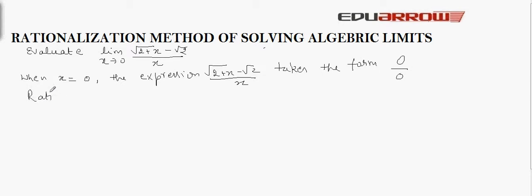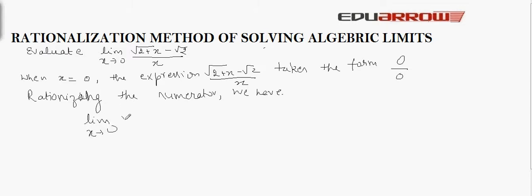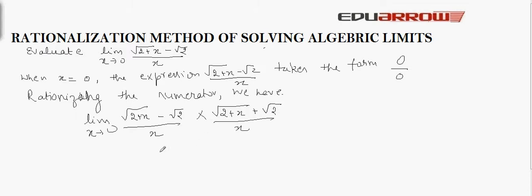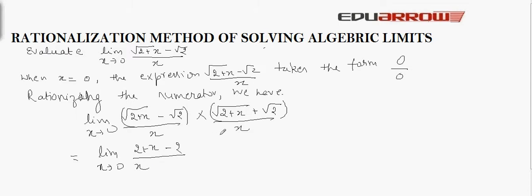So, rationalizing the numerator, we take limit x tends to 0. We rationalize by using the opposite sign so that we can apply the formula (a − b)(a + b) = a² − b². It will become (2 + x − 2) divided by x multiplied by (√(2+x) + √2) in the denominator, giving us (√(2+x) + √2) in multiplication with x. Then 2 is cancelled out by 2.